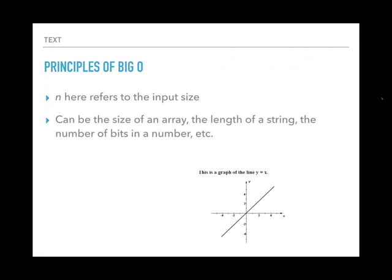Here n refers to input size, and it's important to understand what n means because we use it constantly. N just means the input size, and how you measure that depends on the algorithm. If it's reversing a string, n is the length of the string. If it's sorting an array, n is the number of elements. For numeric functions like square root, n might be the number of bits comprising the input number. The key is knowing what quantity scales up and down as your inputs get larger or smaller.